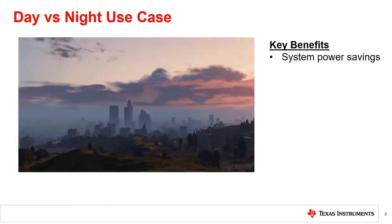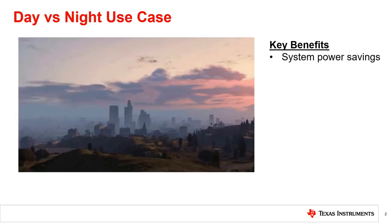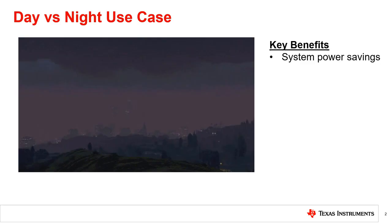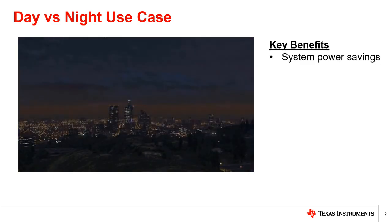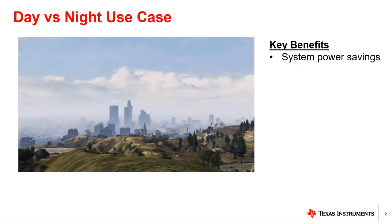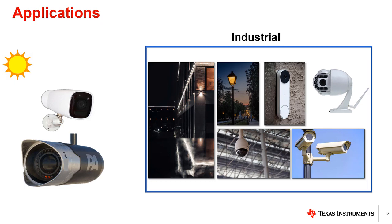A frequent use case for applications is to be able to tell when a light threshold is crossed. This is often used to determine whether it is daytime, with a high lux value of light in the environment, or nighttime, where there is a minimum amount of light in the environment. Applications with this use case change operation based on the amount of light in the environment. With an ambient light sensor, you are able to sense the amount of light in the environment and alert the application when it is time to change operation.